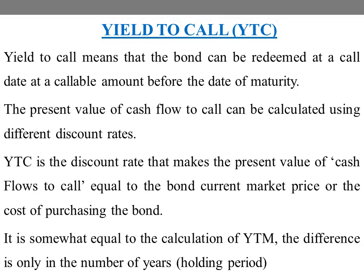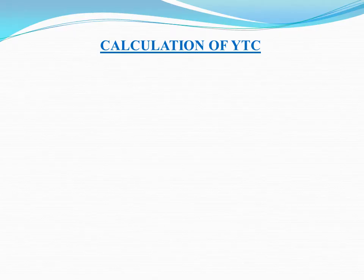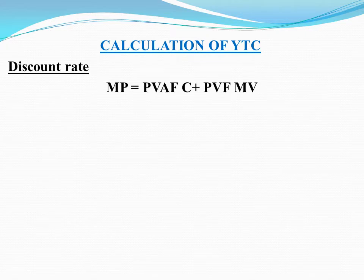In the calculation of YTC, we use the same trial and error method and procedures as YTM. The main difference is the number of periods — the holding period. If the YTM period is 10 years, the call date may be at 5 or 6 years.